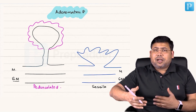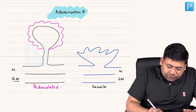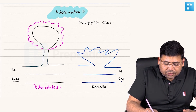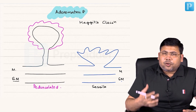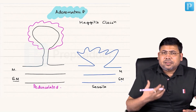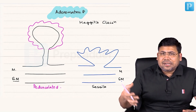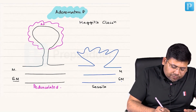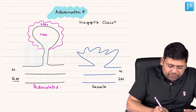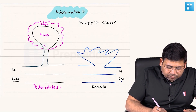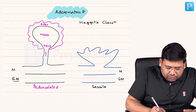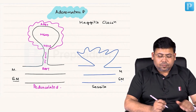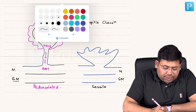The classification for adenomatous polyps and the adenocarcinoma present on them is Haggitt's classification. Based upon where the tumor is located, it classifies the polyp into different Haggitt's categories. The parts of the polyp are: the apex at the top, then the head, then the neck, then the stalk, and finally the root.